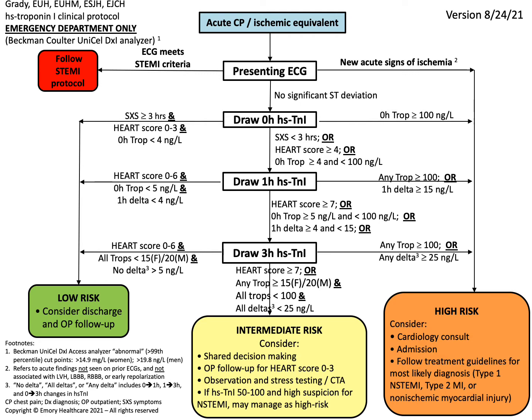This clinical protocol for HS troponin is for use in the emergency department only — it is not intended for patients already admitted to inpatient wards or in the ICU. This protocol synthesizes patients' symptoms, duration of symptoms, ECG findings, and the HART score — which incorporates history, ECG findings, age, risk factors, and troponin values — as well as individual and delta troponin values, calculated by subtracting a baseline troponin from a subsequent value. This is a 0, 1, and 3-hour troponin protocol where the 0 and 1-hour troponins are pre-checked on an ED order pathway, and the 3-hour is optionally checked depending on the results of the earlier tests.